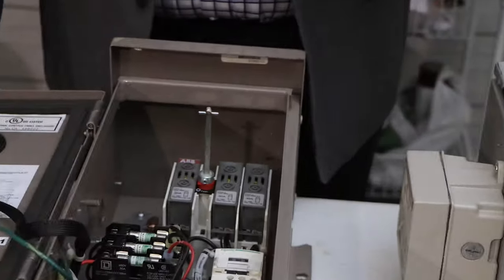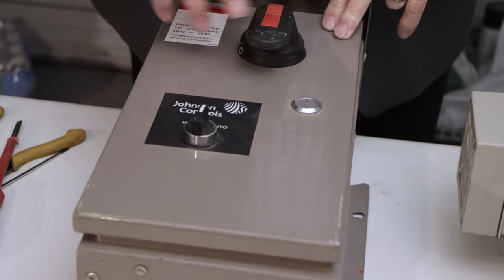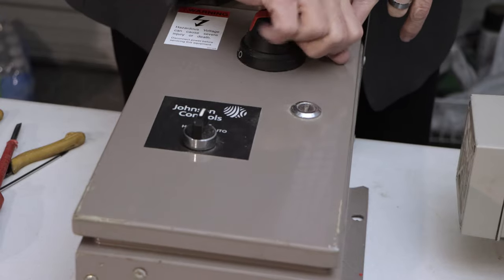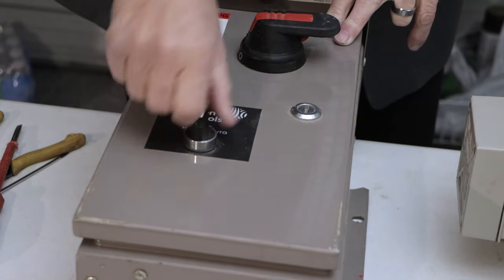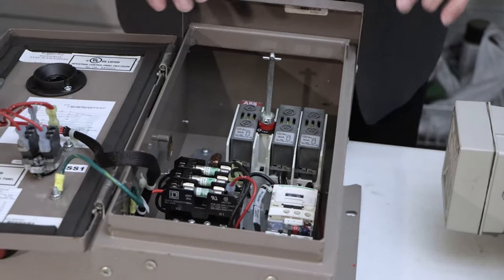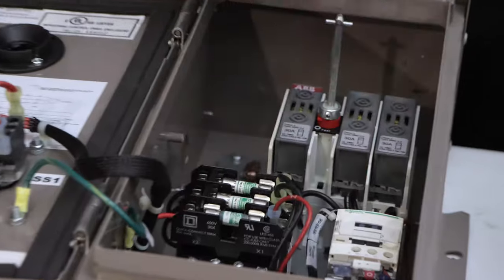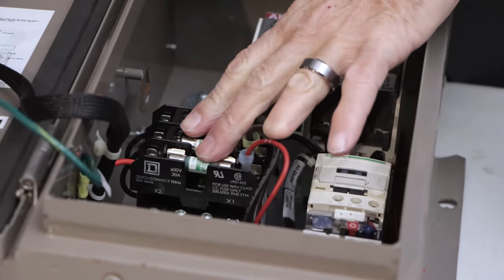Now this is one of two different types of starters, but when I say combination disconnect and starter, this would be something we can turn on and turn off so it's a disconnect, we can run it in hand or automatic, and it has the disconnecting means, it has the starter that we've talked about, and it has the control transformer.